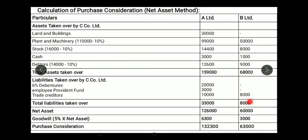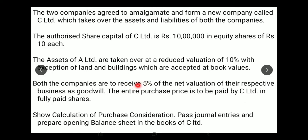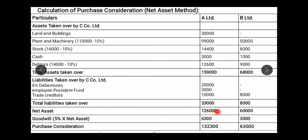Total assets minus total liabilities gives us net assets. For A Limited: 1,59,000 minus 33,000 = 1,26,000. For B Limited: 68,000 minus 8,000 = 60,000. Goodwill is 5% of net assets — for A Limited: 1,26,000 × 5% = 6,300; for B Limited: 60,000 × 5% = 3,000. Purchase consideration = net assets plus goodwill: A Limited PC = 1,32,300; B Limited PC = 63,000.